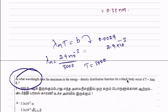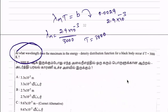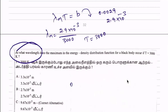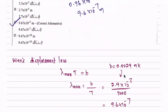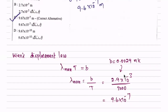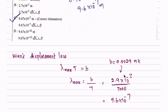The answer is 9.6 × 10⁻⁷ meters. Option C. If you know the black body radiation unit, you can easily answer this question. In Wien's displacement law, lambda max times T equals b, so lambda max equals b divided by T — 2.9 × 10⁻³ divided by 3000 — giving 9.6 × 10⁻⁷ meters.